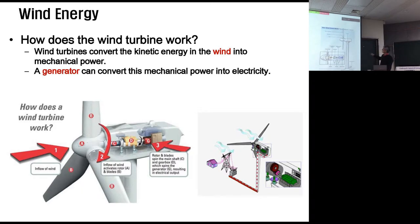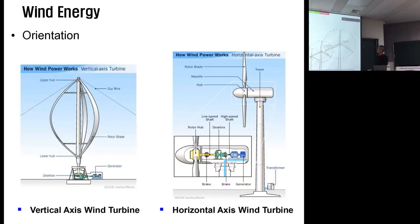Orientation. Usually you expect to see we call this a horizontal axis wind power system. Horizontal, parallel with the wind direction. So we call this a horizontal system, horizontal axis. But there is also another type: vertical axis. Wind is blowing in this way, so axis is vertical. But nowadays this is more popular.